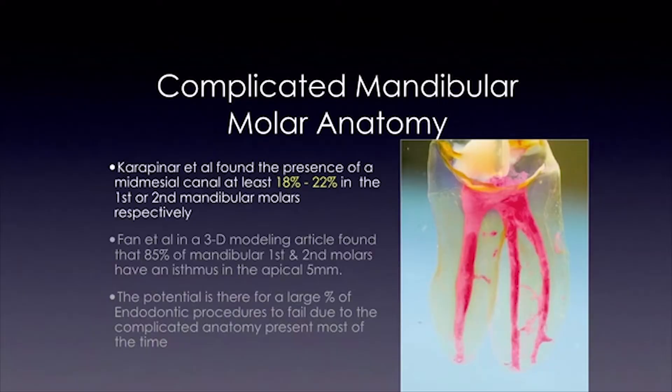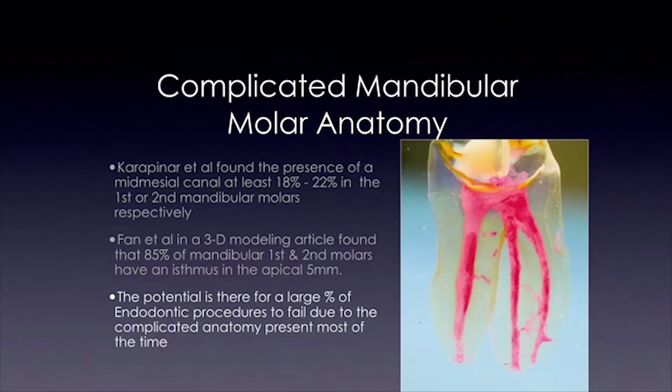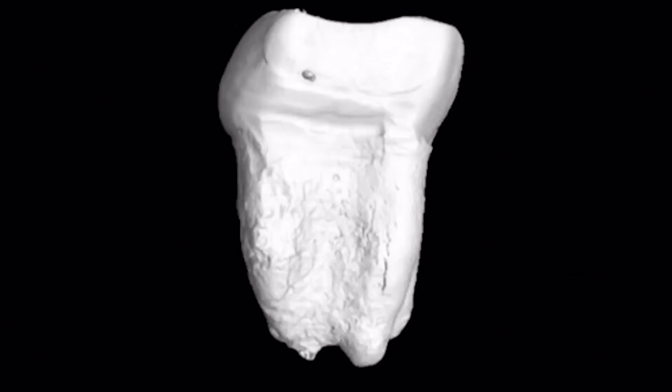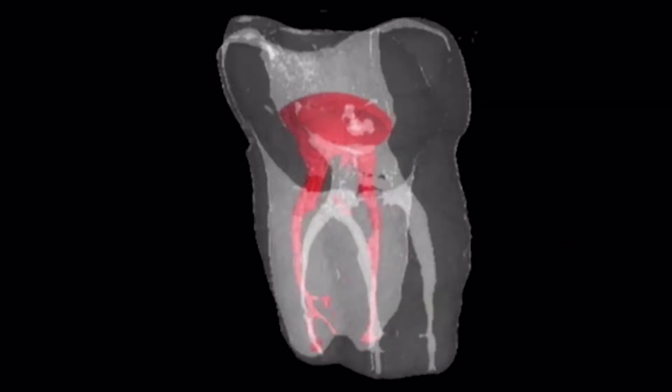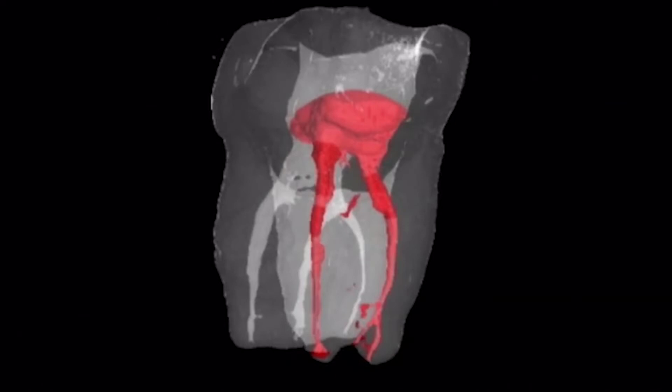To further illustrate the importance of technology, research by Carpenter and Associates found a mid-mesial canal in the mandibular first and second molar 18 to 22% of the time. Fan's 3D modeling article found that 85% of mandibular first and second molars have an isthmus in the apical 5mm. Clearly there is potential for a large percent of endodontic procedures to fail due to complicated anatomy. This model illustrates anatomy we often see — the distal root showing two canals with complicated anatomy and multiple portals of exit, and the mesial root with three-canal anatomy that needs to be addressed.